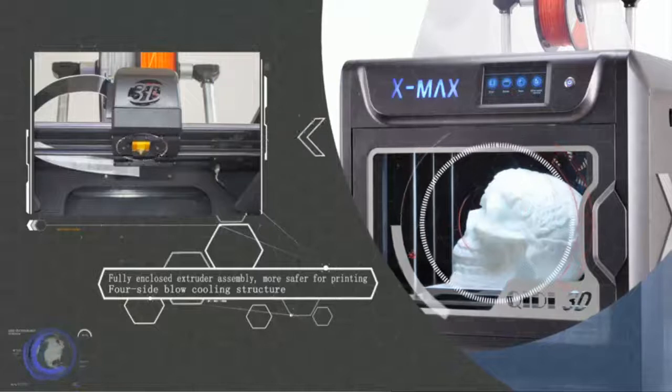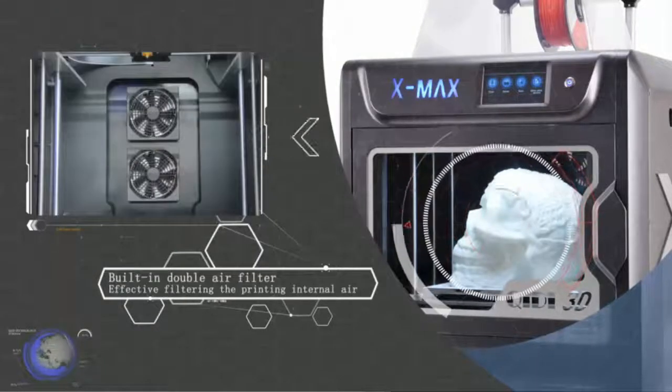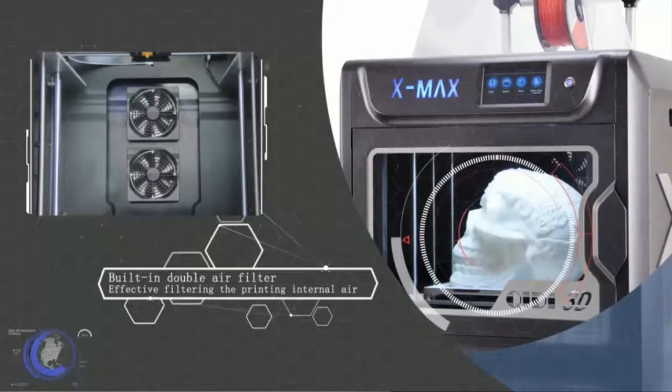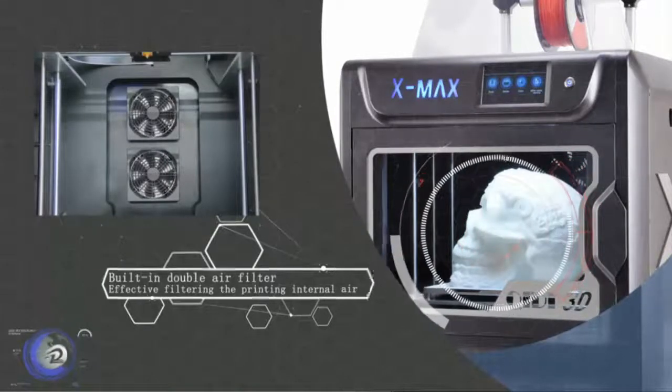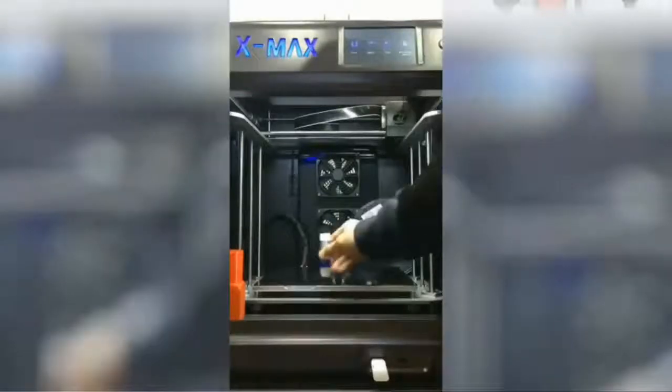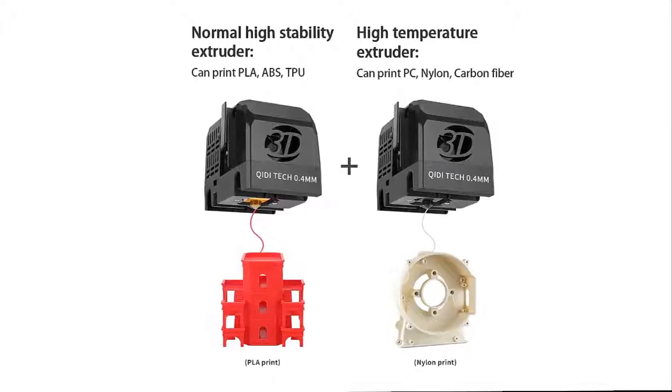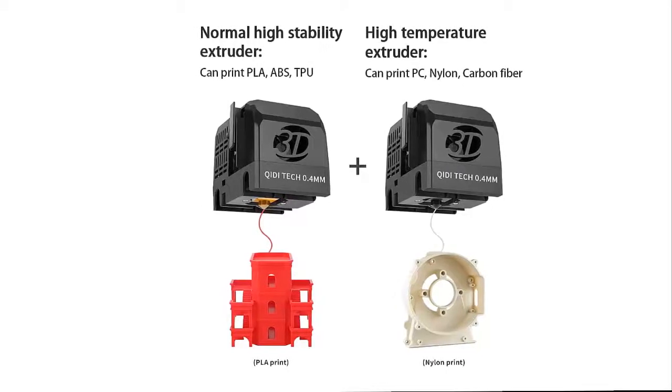Double Z-axis structure. XMAX innovatively adopts higher-cost industrial-grade dual Z-axis support and works in conjunction with two-axis motors. Large-size 3D printers are more stable when printing larger models without jitter. Especially when the model is printed continuously for more than 24 hours, the accuracy remains stable. It is very suitable for engineering and mass production of professional quality printing.